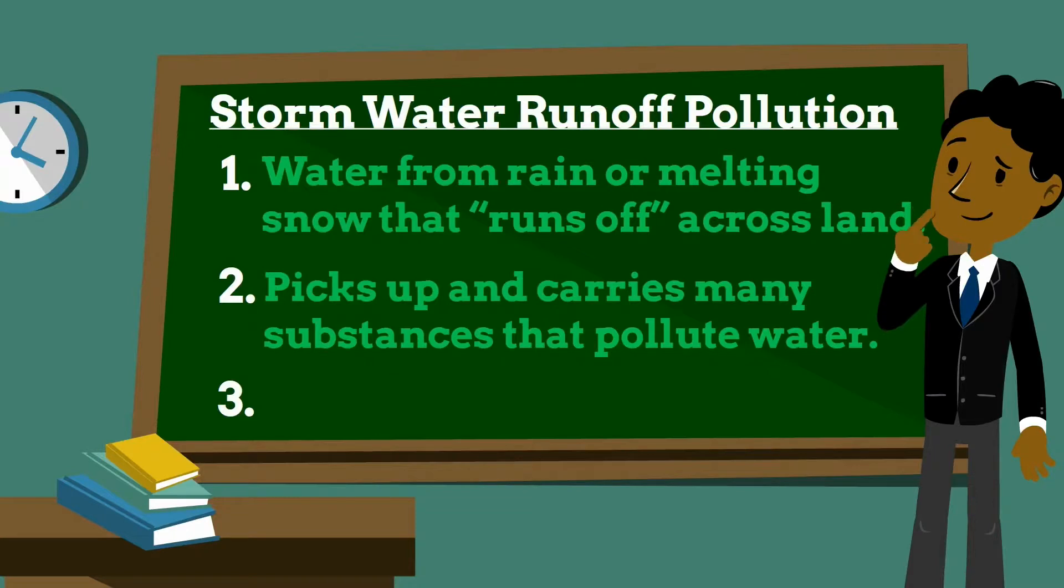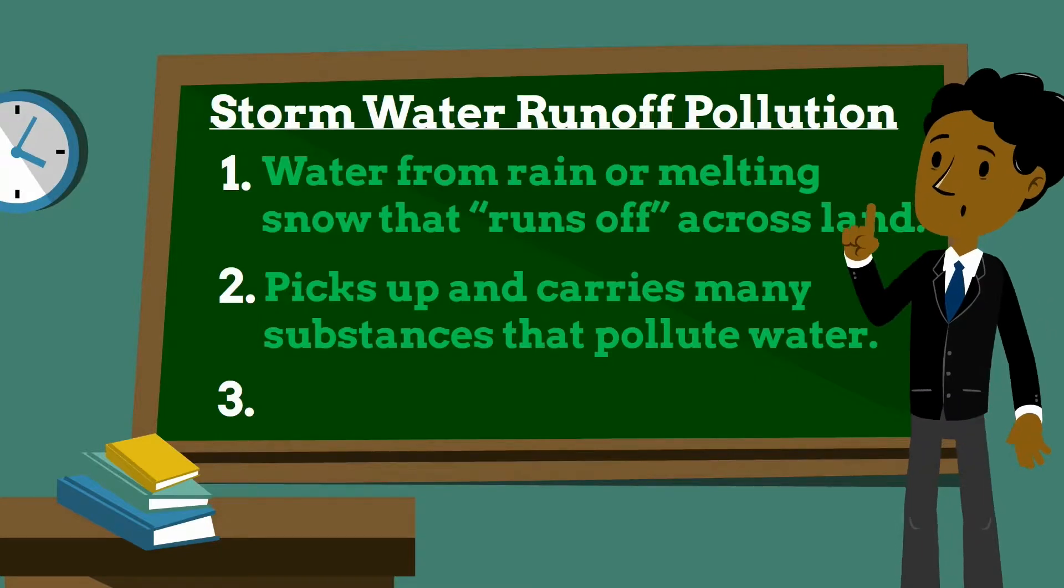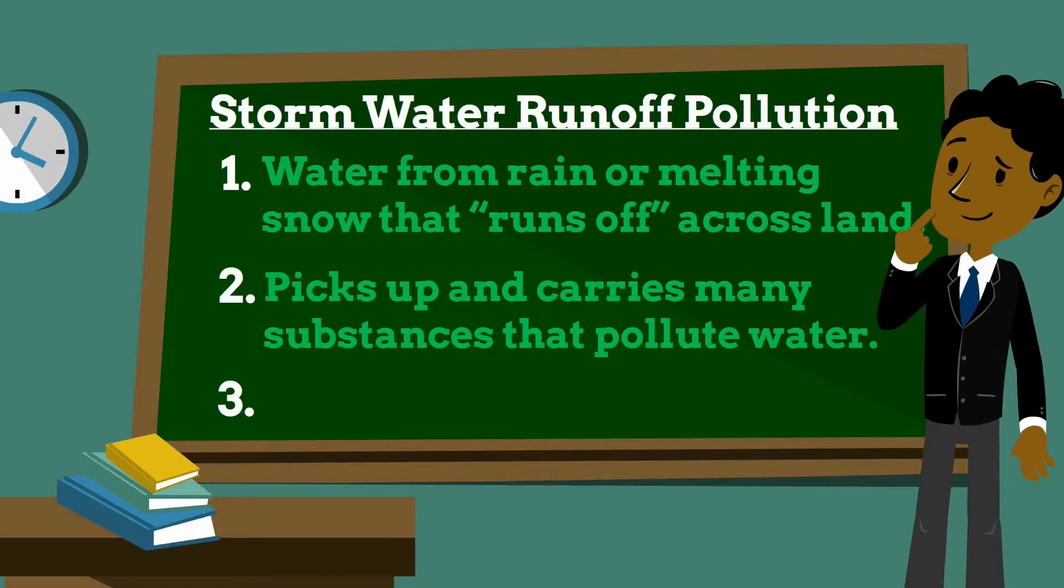In addition to rain and snow melt, various human activities like watering, car washing, and malfunctioning septic tanks can also put water onto the land surfaces. Here, it can also create runoff that carries pollutants to creeks, rivers, and lakes.